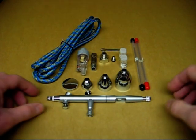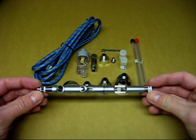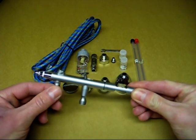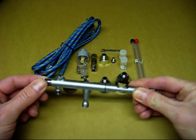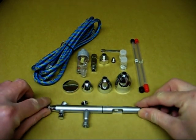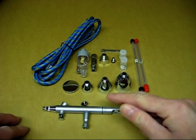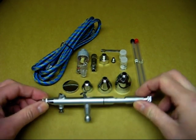Let's see what you get in the box. Gravity feed airbrush with a built-in pressure regulator. Three different size colour cups and the lid. They screw into the top of the airbrush.